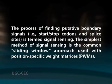The process of finding putative boundary signals — that is, start or stop codons and splice sites — is termed signal sensing. The simplest method of signal sensing is the sliding window approach used with position-specific weight matrices (PWMs). A PWM consists of positions, each with a distribution over nucleotides. For finding donor splice sites, the fourth and fifth positions accept only G and T respectively, while other positions reflect compositional biases at corresponding positions flanking true donor sites.